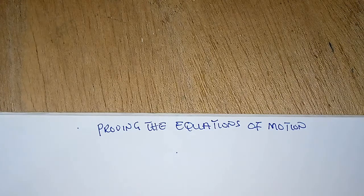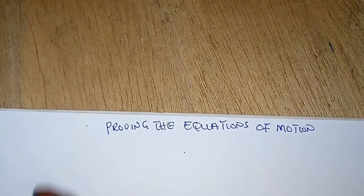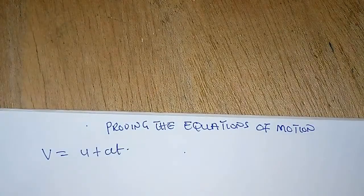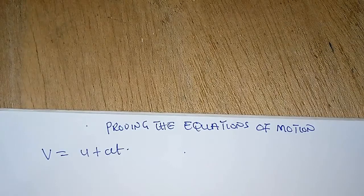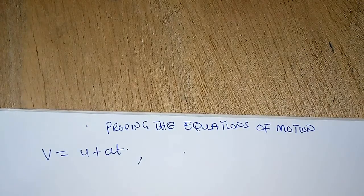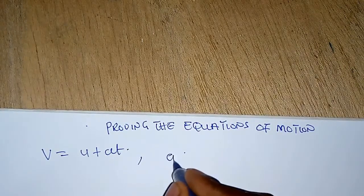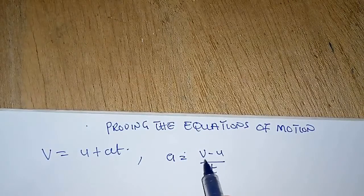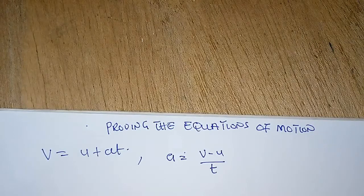The first equation of motion is V equals U plus AT. How do you prove this? To prove this first equation of motion, we should know that acceleration is change of velocity over time. So acceleration A is equal to change in velocity over time, where V stands for final velocity and U stands for initial velocity.